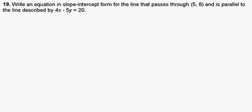Number 19, write an equation in slope-intercept form for the line that passes through (5, 6) and is parallel to the line described by 4x minus 5y equals 20.